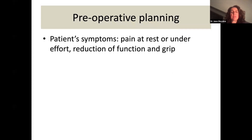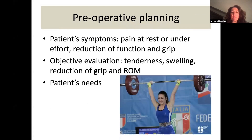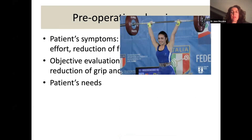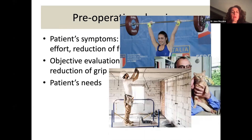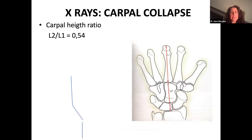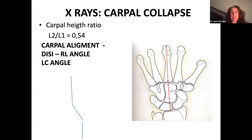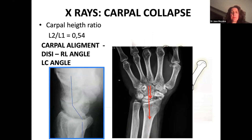In the preoperative planning, we have to take into account the patient's symptoms: pain at rest or under effort, reduction of function and grip, the objective evaluation with tenderness, swelling, reduction of grip and range of motion. Different patients have different needs for use of their wrist — strong grip, intellectual work, dexterity work, or computer work. On X-ray, we can measure the carpal collapse using the carpal height ratio, the radiolunate angle, or lunate-capitate angle.